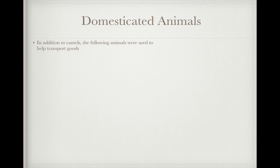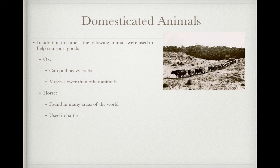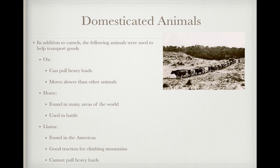In addition to camels, other animals were used to help transport goods — be able to identify and explain the advantages of these animals. The ox was used to pull heavy loads, but it moves slower than other animals. The horse is found in many areas of the world and could be used in battle. The llama in particular is going to be used in the Americas and has really good traction for climbing mountains, but cannot pull heavy loads. Depending on the region of the world, the animals available and what you're transporting, you may use a camel, an ox, a horse, or a llama.